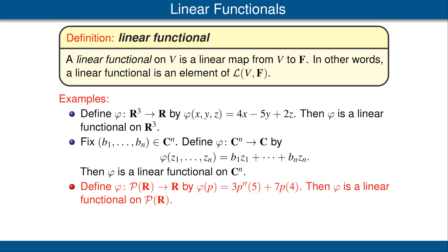For our third example, define a linear functional phi on the vector space of polynomials with real coefficients by phi of polynomial p equals 3 times the second derivative of p at 5, plus 7 times p evaluated at 4. Then phi is a linear functional on the vector space of polynomials with real coefficients, because we are mapping into the scalar field R.